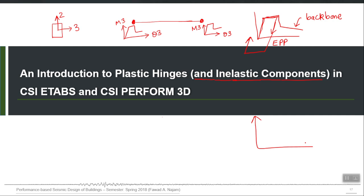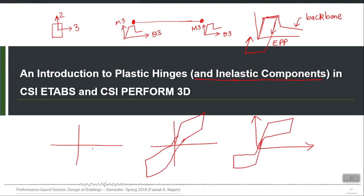Reinforced concrete structures mostly follow what we refer to as the Takeda model, where the unloading stiffness can be different from the initial loading stiffness, and the same applies in the opposite direction. For metals, elastic-plastic behavior is more typical — there can be some post-yield stiffness ratio, but the unloading stiffness is still equal to the initial loading stiffness.